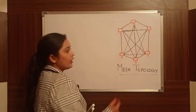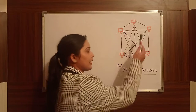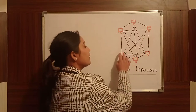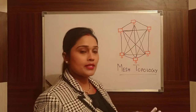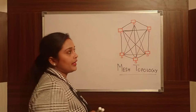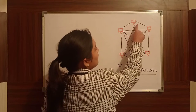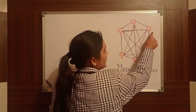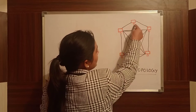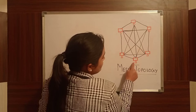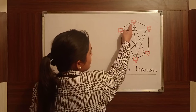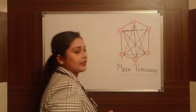See, the mesh topology looks like a diamond shape. Each node is connected to every other node. This node is connected to this node, and this node is connected to this node.